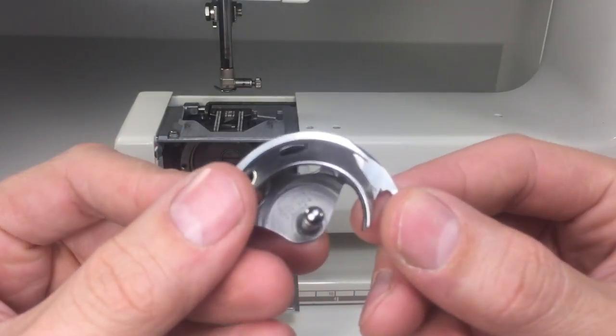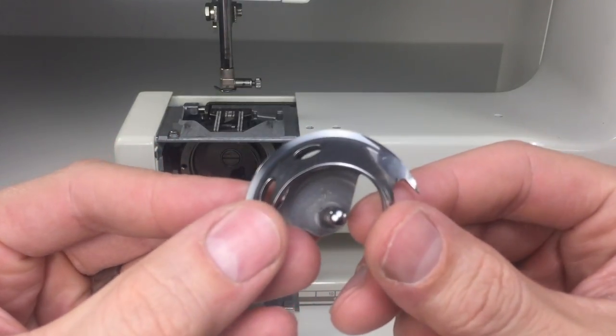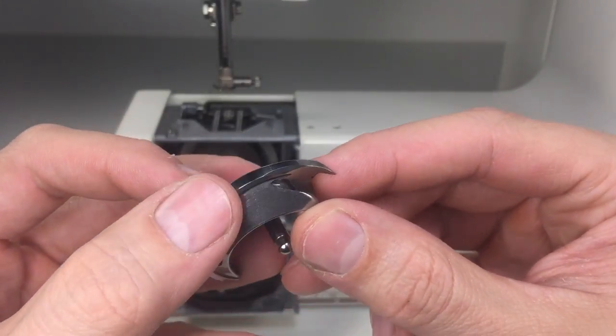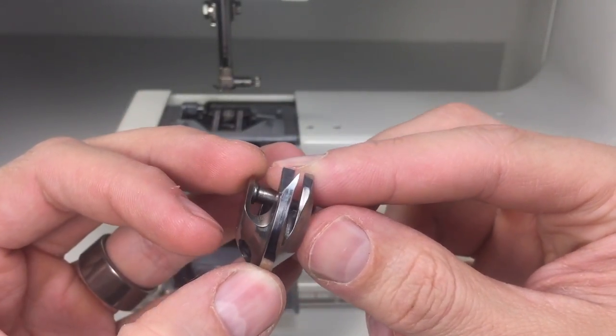We'll next be looking at our hook, just making sure that the hook tip is nice and smooth, checking for any burrs on the ends or the outside edge. I'm trying to get the camera to focus, so I do apologize if the picture seems a little distorted.